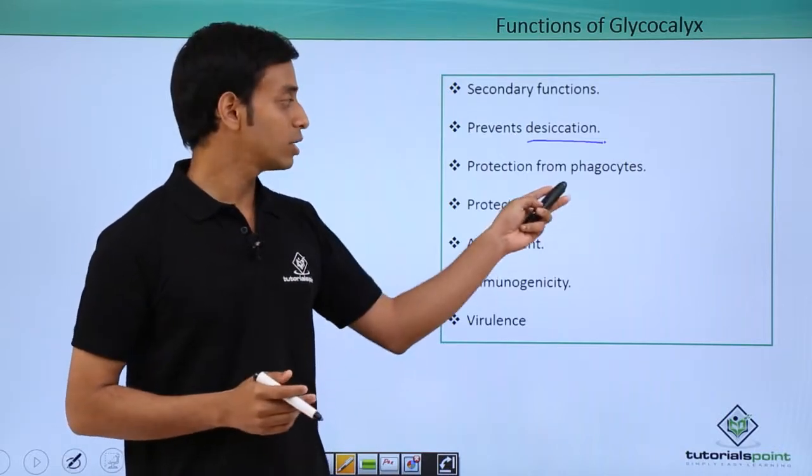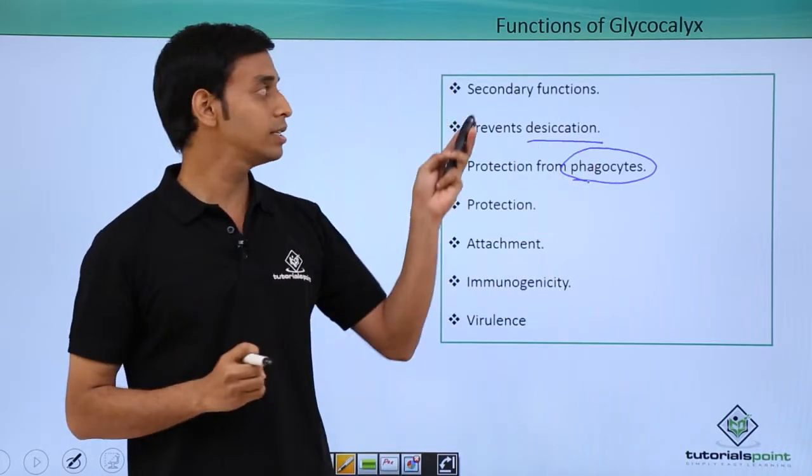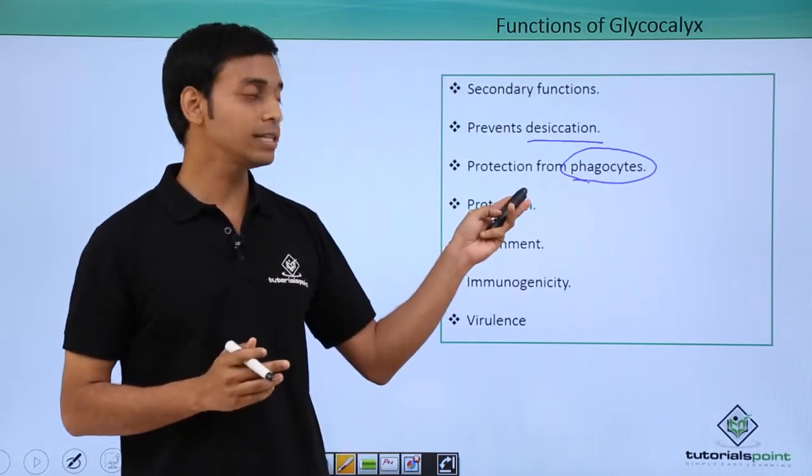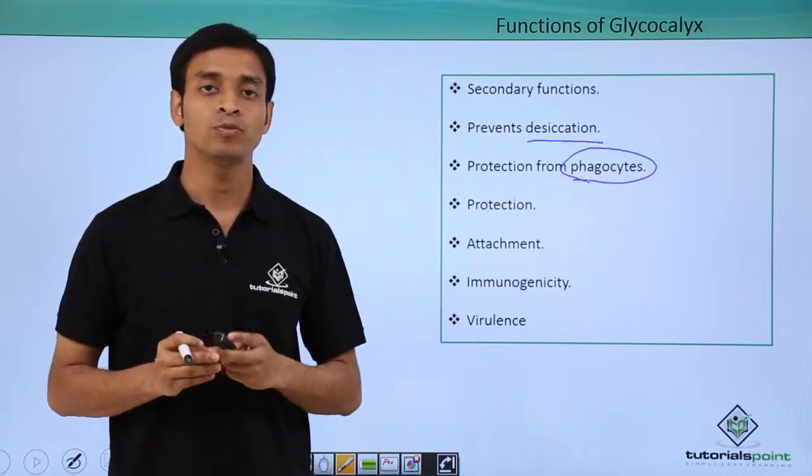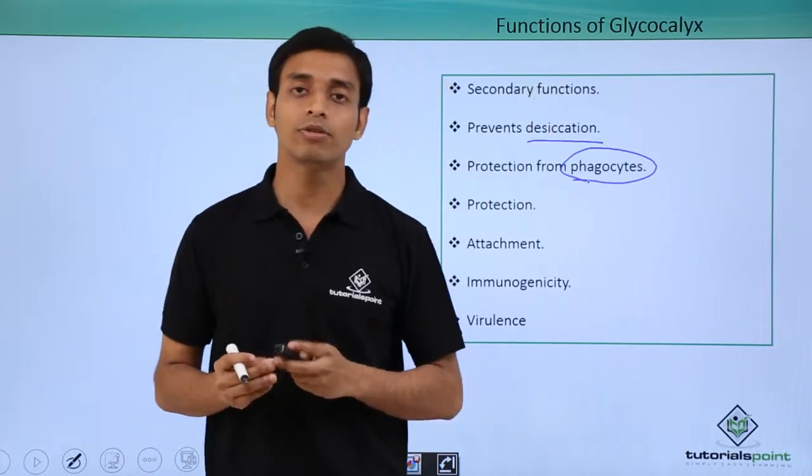They provide protection from phagocytes. Phagocytes are cells which have the capability to eat up these bacterial cells. They can lyse the bacterial cells, they can kill these bacterial cells. So glycocalyx actually provides protection from these types of phagocytes.